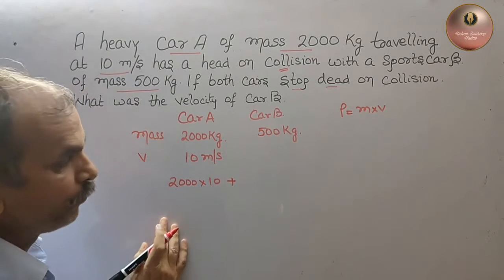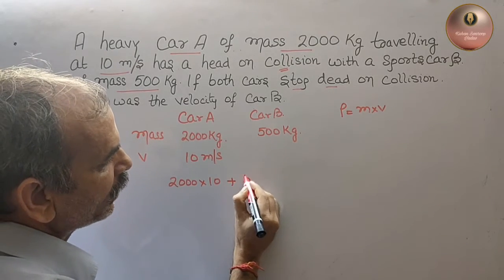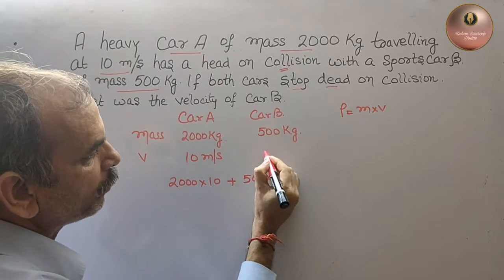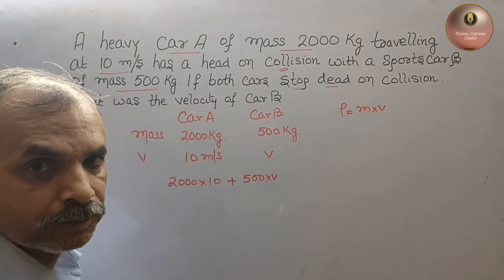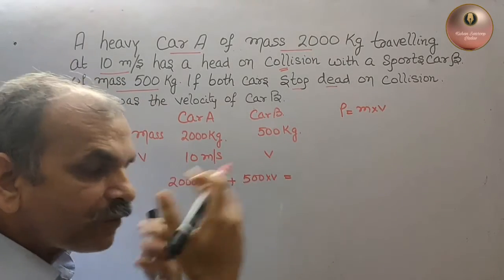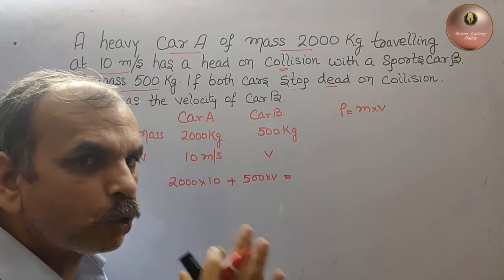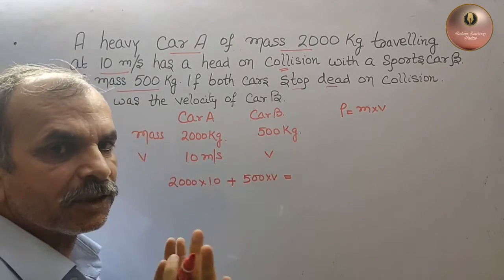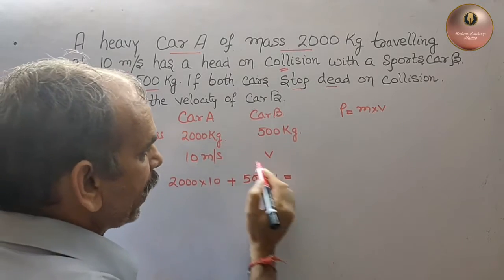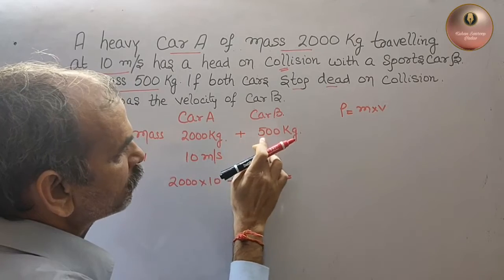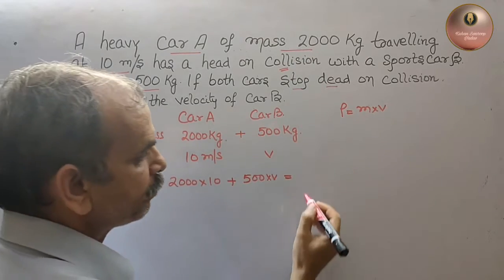Before collision we are writing: 2000×10 + 500×V. We have taken this as V. This is equal to after collision total momentum. Mass will not get changed, so total mass will be...